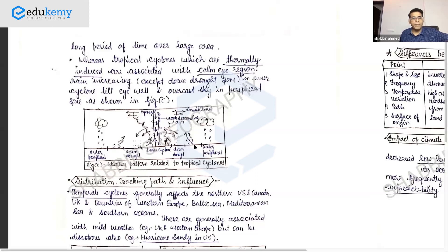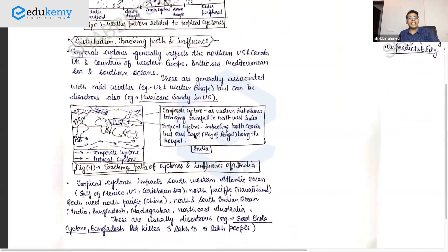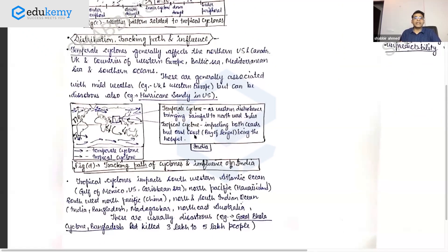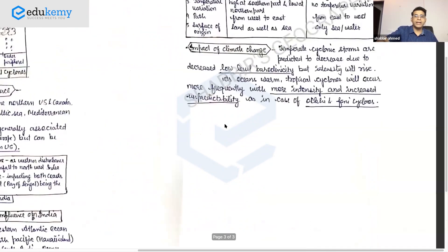In one paragraph on distribution, tracking and influence: temperate cyclones occur in northern US, Canada, European countries, Arctic Sea in winters - mild weather but some disasters also. Tropical cyclones: southwestern Atlantic, Gulf of Mexico, China, Madagascar, India. Give recent examples. Include a diagram showing temperate cyclones in India as western disturbances, and tropical cyclones impacting both coasts.